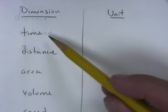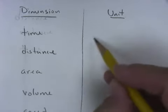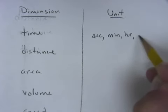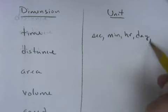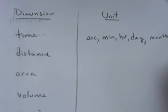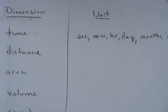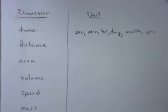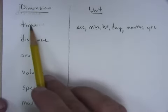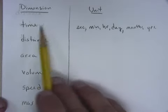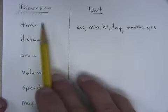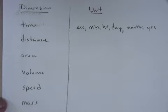For example, what do we measure time in? Time can be measured in seconds, minutes, hours, days, months, years. You get the idea. So if I were to say minutes, you would say time. If I were to say hours, you would say time. If I were to say months, you would say time. And these units are what we measure the dimension of time in.